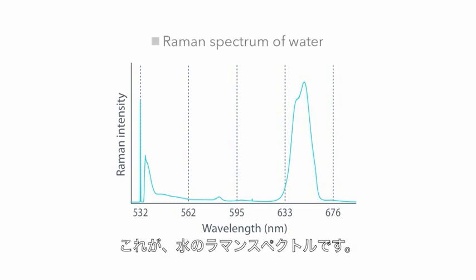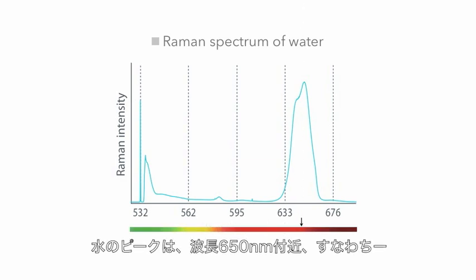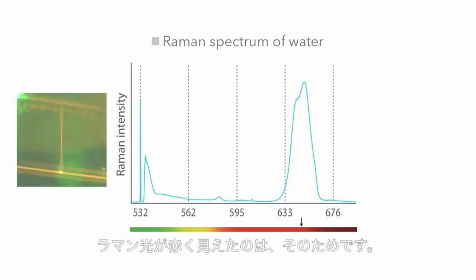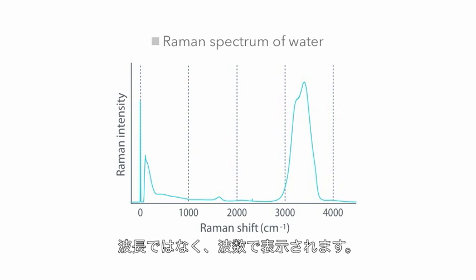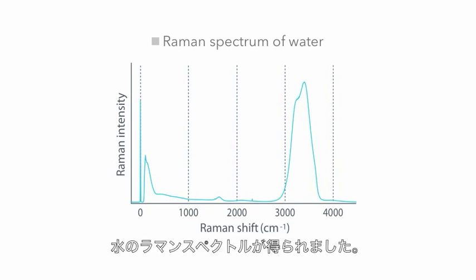This is the Raman spectrum of water. When using an excitation wavelength of 532 nanometers, the Raman peak of water appears around 650 nanometers, the wavelength of the color red. That is why the Raman light was visible as red light. Usually, the horizontal axis of a Raman spectrum is indicated by wavenumber, not wavelength. By using wavenumber, we see the Raman spectrum of water independent of the excitation wavelength.